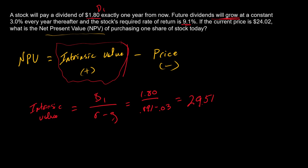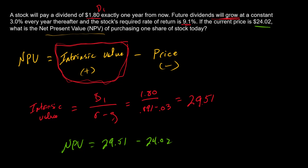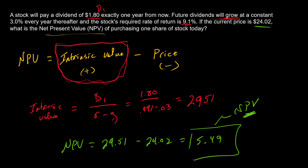Now let's subtract the price, $24.02. So the NPV of this stock investment is $29.51 minus $24.02, which is $5.49. You can think of purchasing this stock as increasing your wealth in present value terms by $5.49.